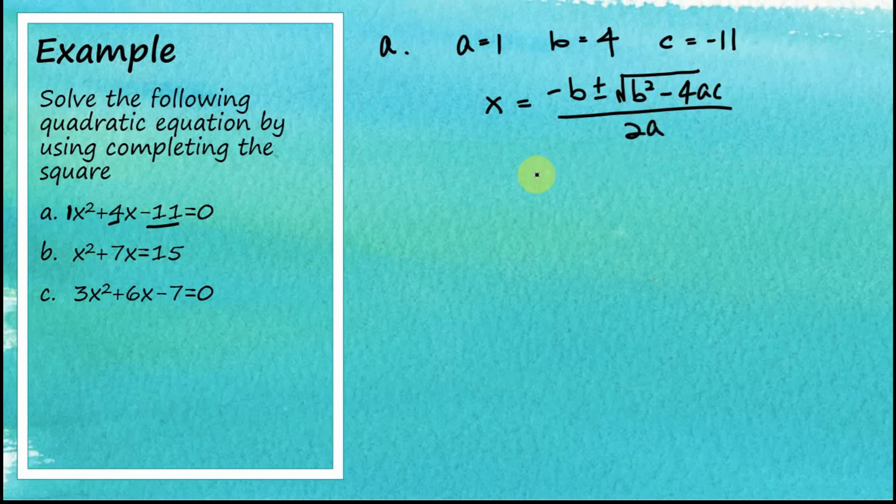Now let's plug in a, b, and c into this formula. Negative b, our b is 4, so negative 4 plus minus square root of b squared. b is 4, so we have 4 squared.